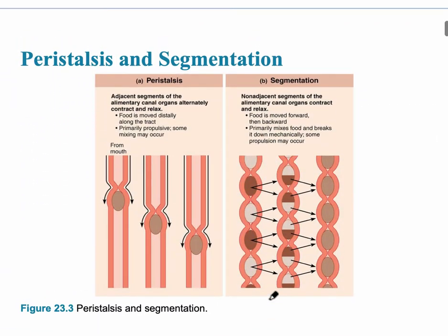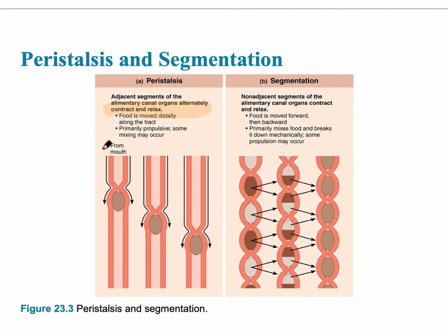Peristalsis refers to food moving through the intestine; it occurs in the alimentary canal organs and involves alternating contraction and relaxation of muscles, moving food progressively from the mouth toward the more distal end. Segmentation, by contrast, occurs in non-adjacent segments of the GI tract and is primarily about mixing food and breaking it down mechanically. The main goal of segmentation is the mechanical digestion of food.